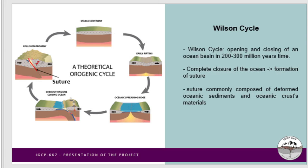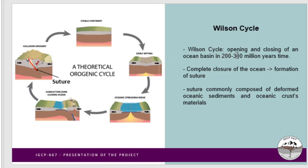Also known as the Wilson Cycle, it began with the extension of continental crust, the development of the ocean basin, consumption of ocean crust, and finally the collisions. The whole process roughly took 200 to 300 million years, and the complete closure of the ocean results in the formation of sutures.